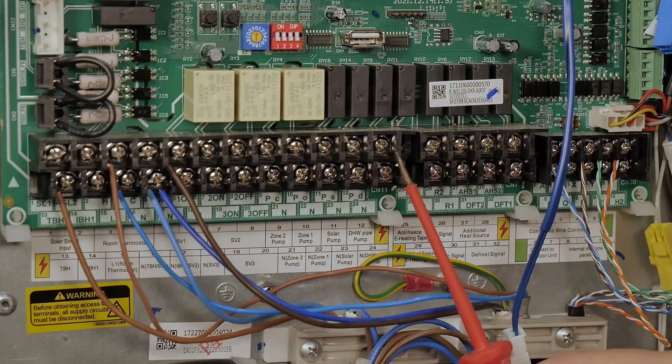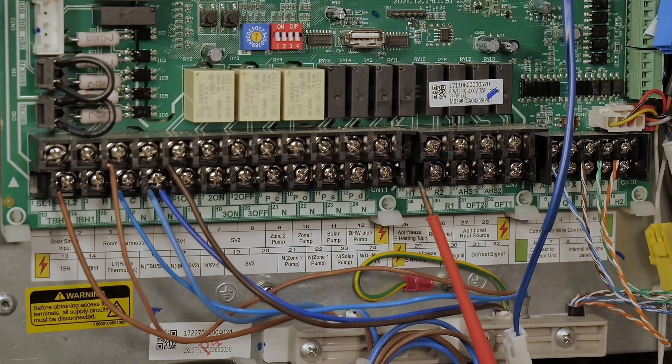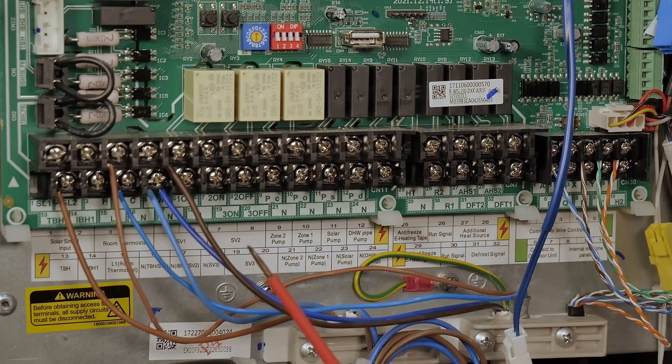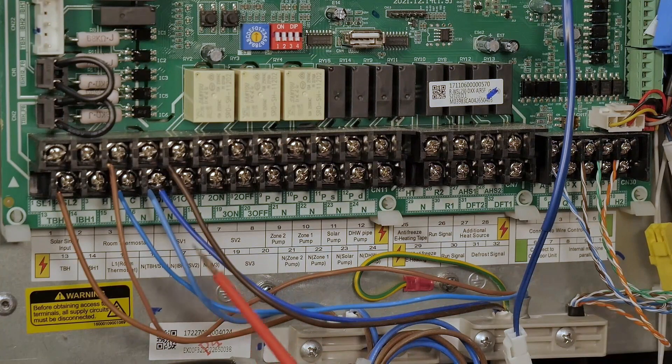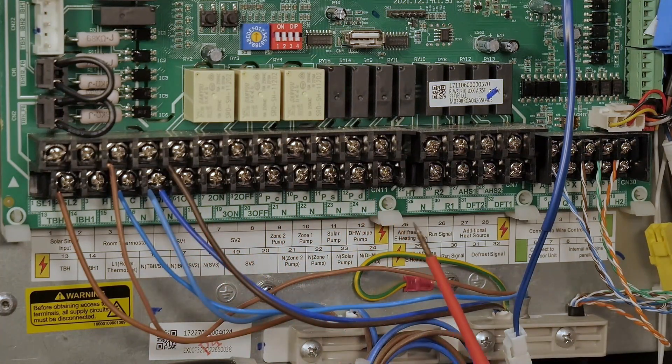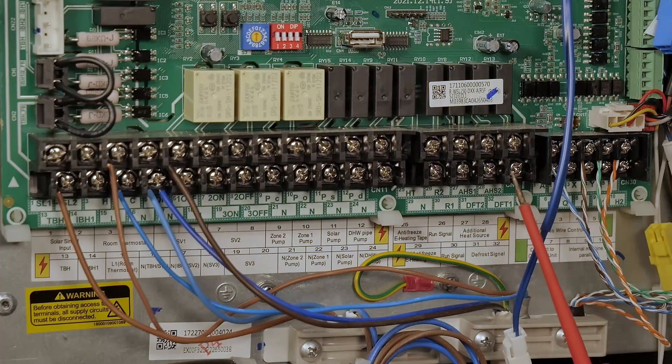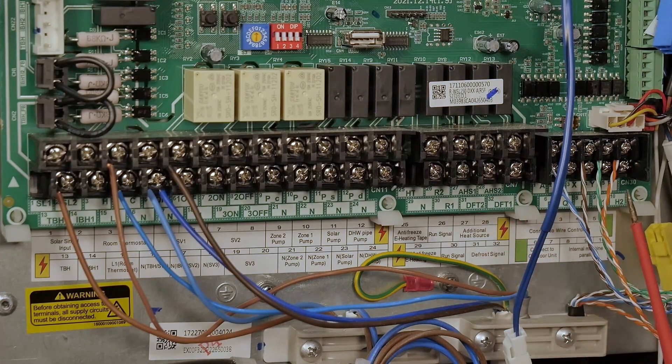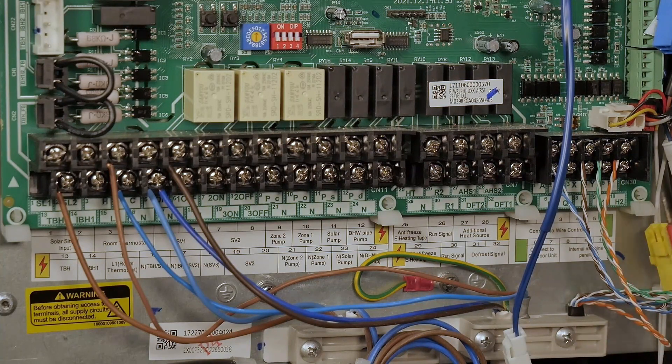This is the initial terminal block CN11, so this is where you'll be bringing in your heating controls, your immersion switching - most of the switching is done through the terminal blocks on this section. This is CN7 which we won't be using at this point, and this is CN30 which is all the terminals for your cat5 cable for your user interface.